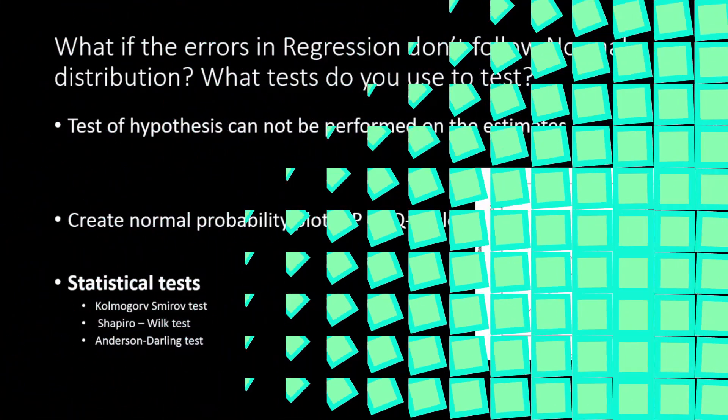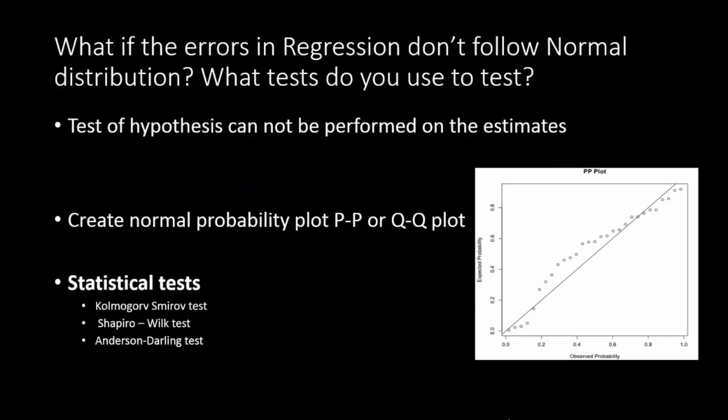What if the errors in regression don't follow normal distribution? And what tests do we use to test for normality? The test of hypothesis cannot be performed on the estimates if you face non-normal error terms. There is no issue with estimation—you can come up with your OLS estimation—but we cannot perform test of hypothesis because test of hypothesis is totally related to the fact that the data is normally distributed. If there is no normal distribution, you cannot come up with a 5% or 1% interval and test your parameters.